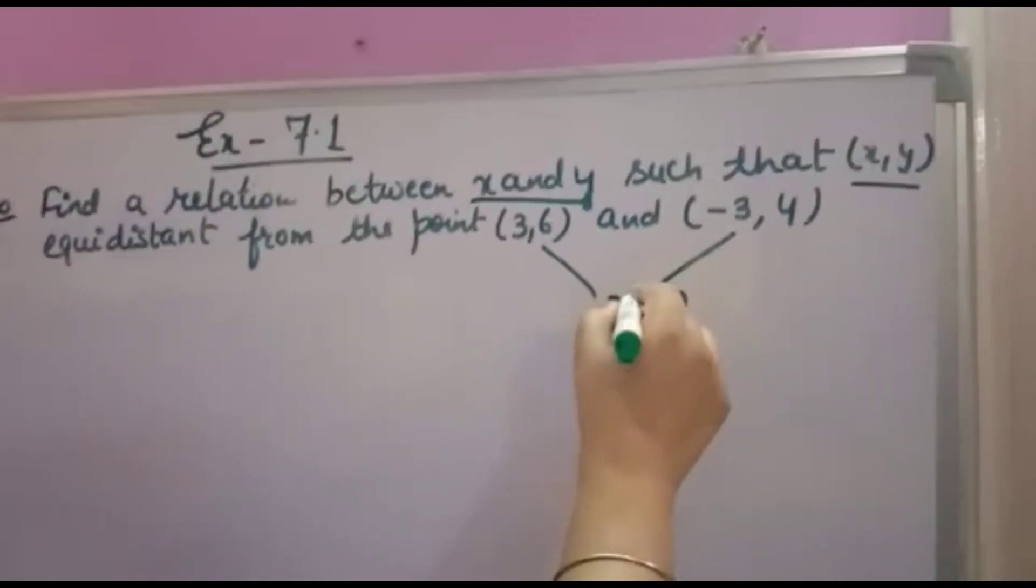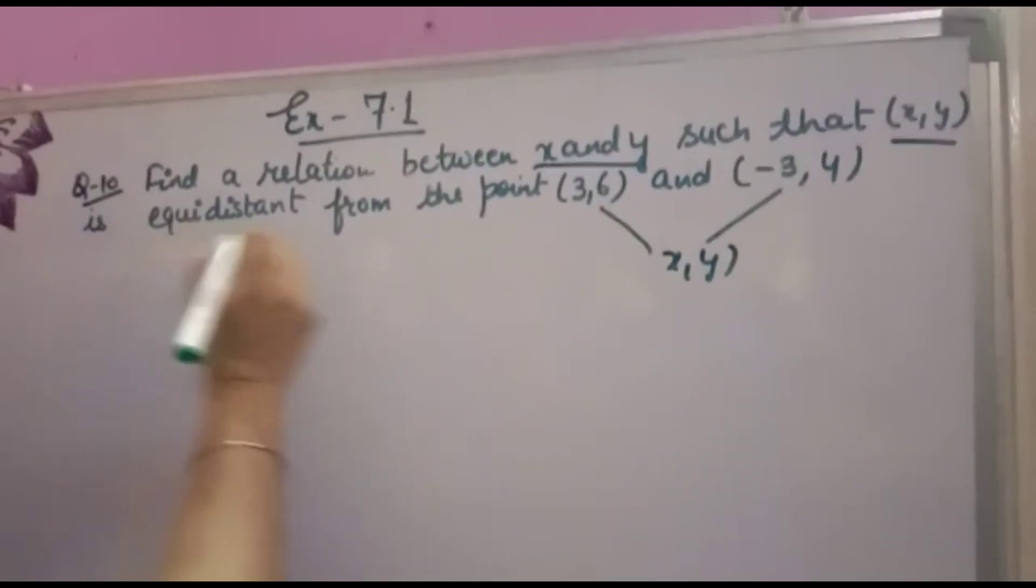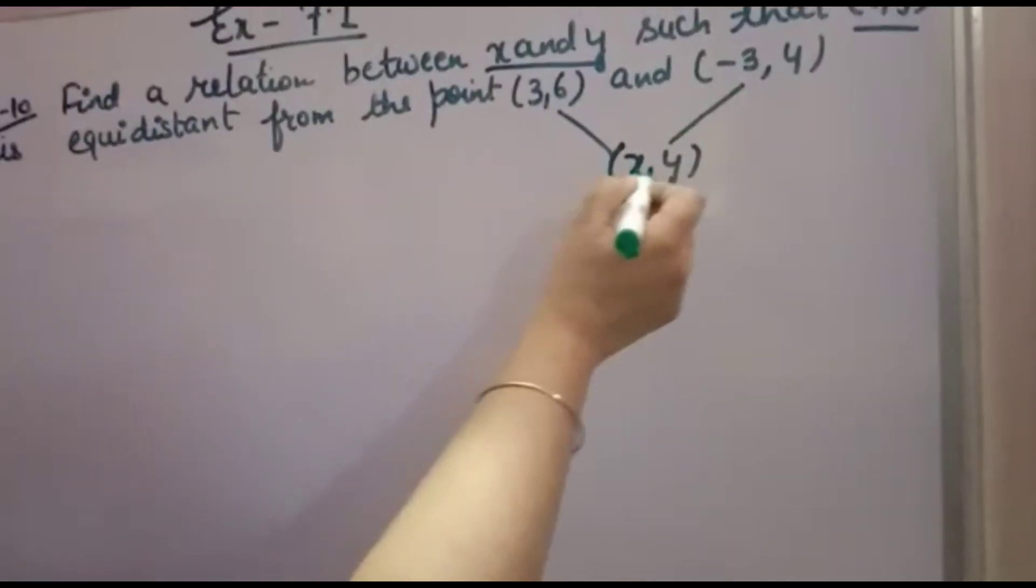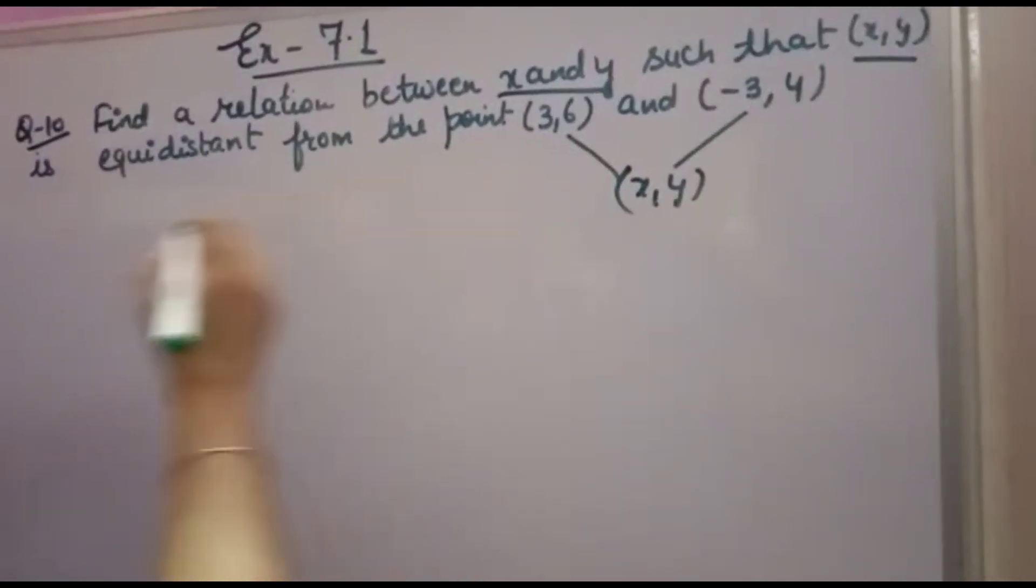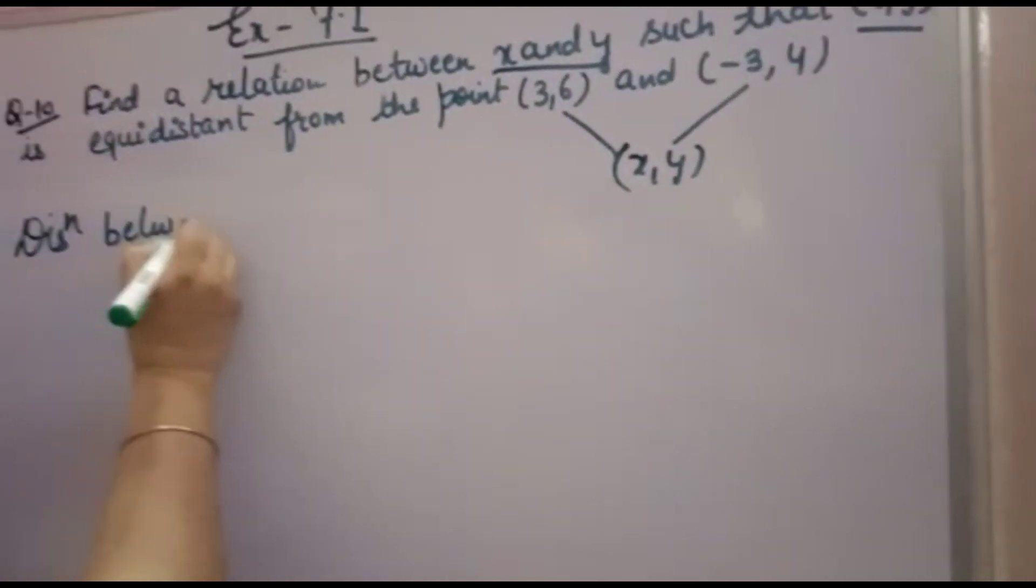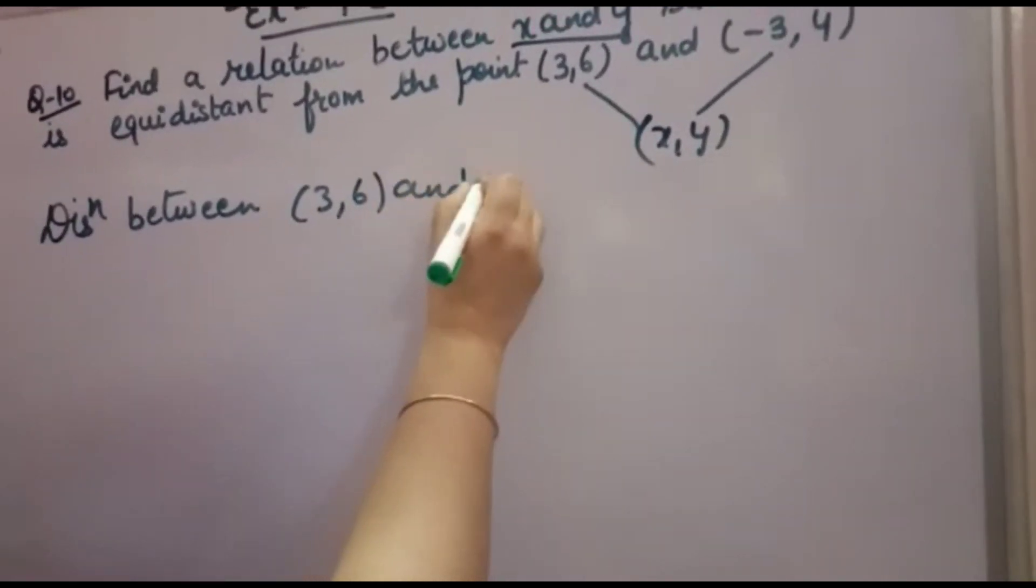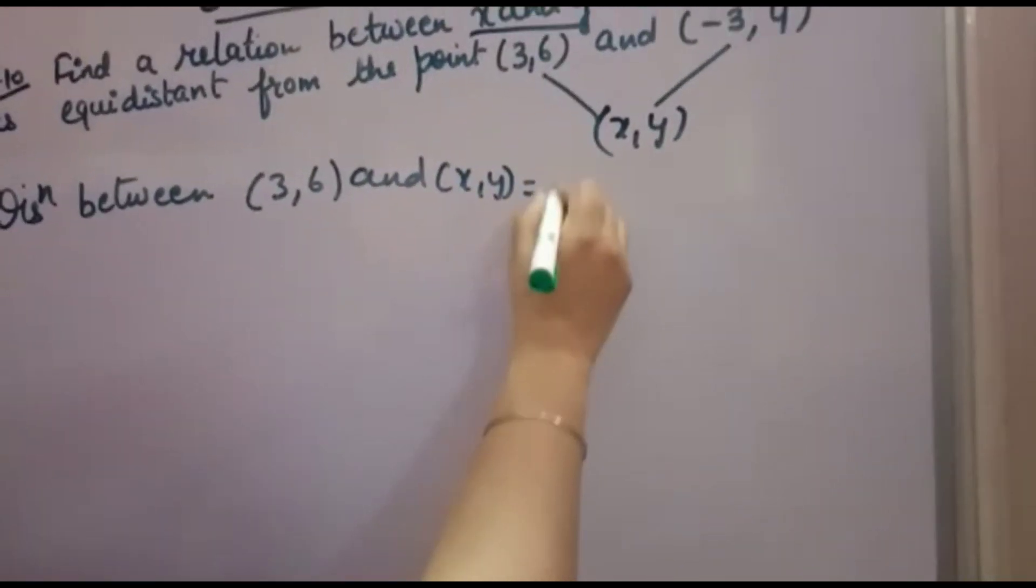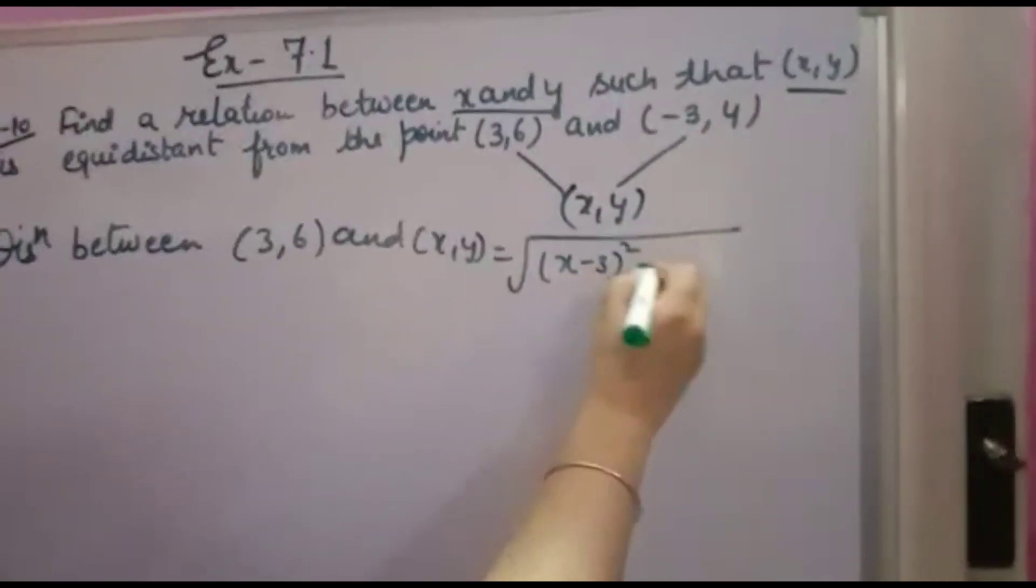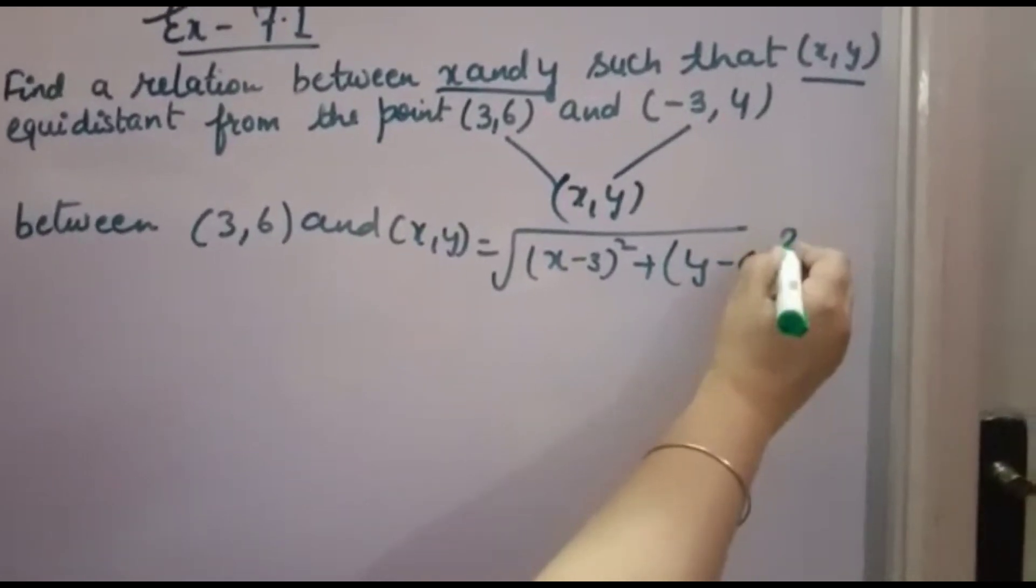By the distance formula, this is X1, this is Y1, this is X2, this is Y2. So the distance between point (3,6) and (X,Y) will be the square root of (X2 minus X1), which means (X minus 3) whole square, plus (Y2 minus Y1), that means (Y minus 6) whole square.